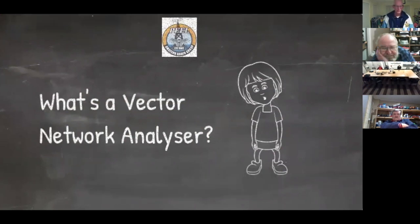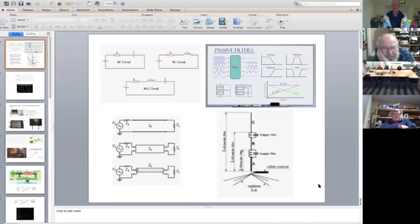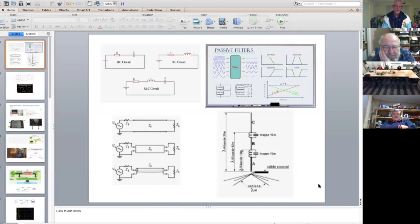A vector network analyzer. What the hell is a network? A network is, for the purposes of this exercise, a collection of passive electrical elements. So resistance, inductance, and capacitance — any sort of combination of those. We're talking about passive elements here. So in electronics terms, that can be called a network.